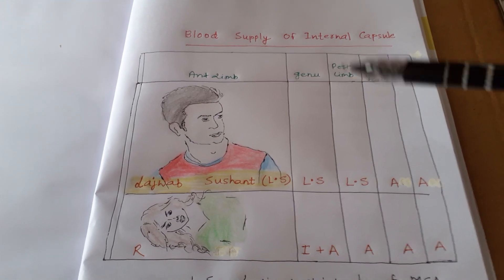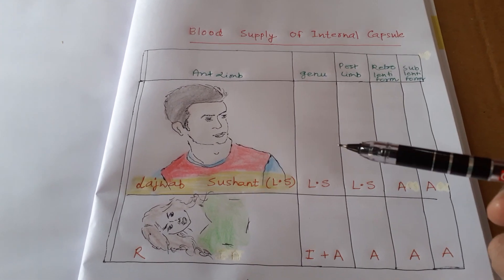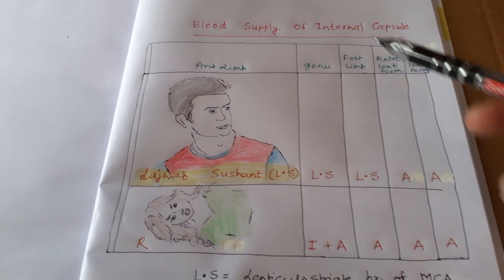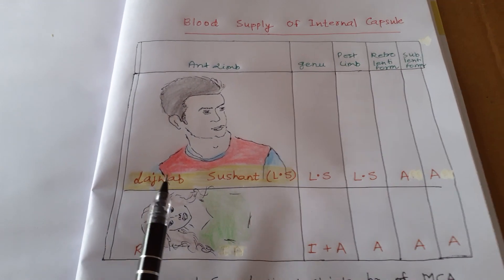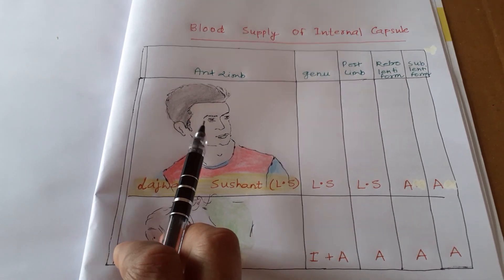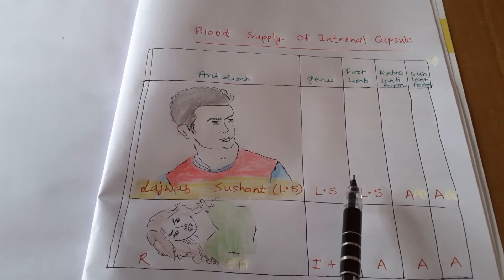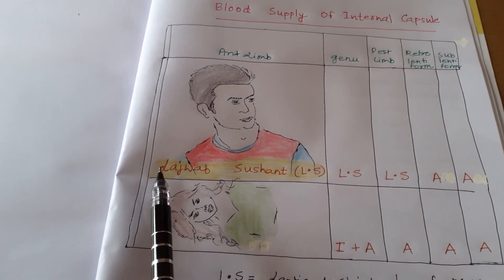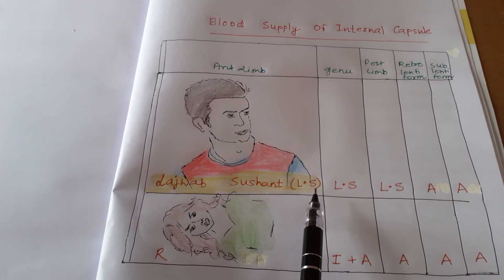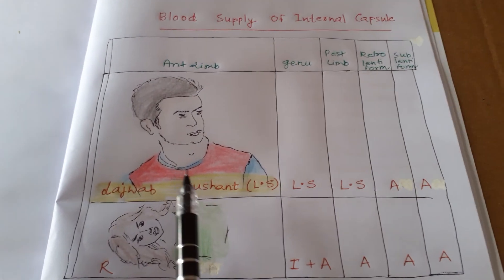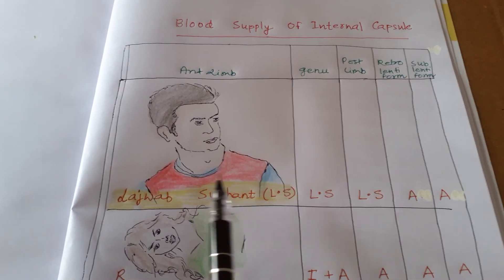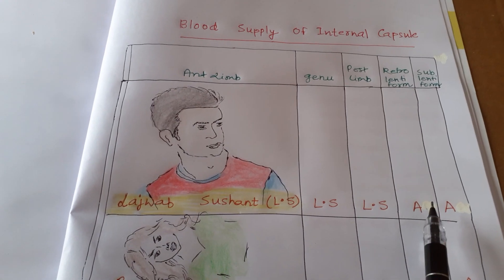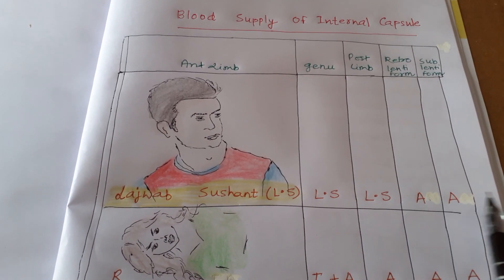Susan Singh Rajput is my mnemonic for the internal capsule. Now coming to the blood supply of the internal capsule — the anterior limb, genu, and the posterior limb. It is supplied by — remember susan singh rajput, so look at her and you get happy, that gives us the mnemonic cue.